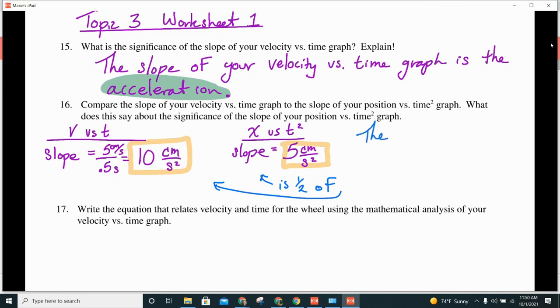So, the slope of the position versus time squared graph is, all right, and let's remember what that was. What did we just say the slope of our velocity versus time is equal to? Yes, acceleration.